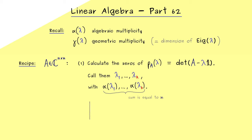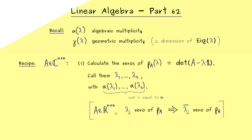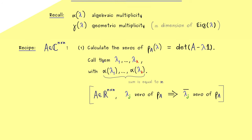Moreover, we have an additional check if we consider a real matrix A — meaning all entries are real numbers. This implies that all coefficients in the polynomial are also real, and therefore if lambda_j is a zero of the polynomial, then its complex conjugate is also a zero of P_A. For example, if the complex number i is a zero, then minus i is as well. So remember: proper complex zeros always come in pairs, but only when the matrix is real.